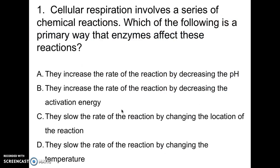Here's a question: Cellular respiration involves a series of chemical reactions. Which of the following is the primary way that enzymes affect this reaction? Read the answer choices. The best answer is that they increase the rate of the reaction by decreasing the activation energy. Remember, enzymes lower — they decrease — the activation energy, and that's how they increase the rate of the reaction.